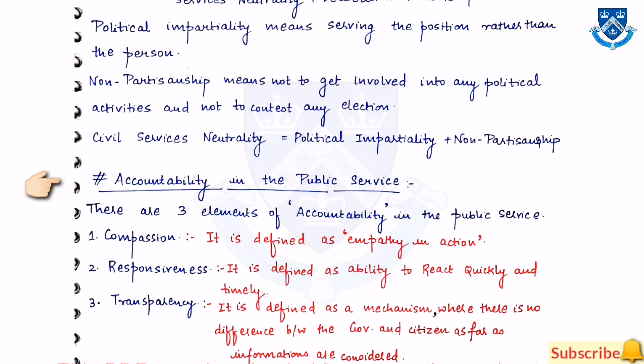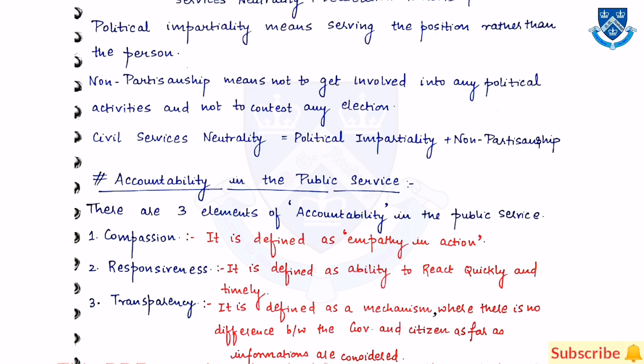Then, accountability in public service. There are three elements of accountability in public service. The first one is compassion, then responsiveness, and the third one is transparency. Compassion and responsiveness have been discussed earlier in the video.